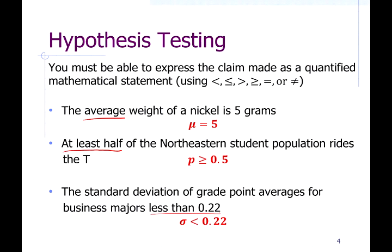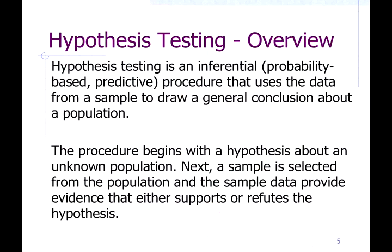Once we have the claim written symbolically, we can begin our hypothesis test. It's a probability-based predictive approach, which involves some possibility of error. We start with a hypothesis about an unknown population parameter, take a sample of data, and determine whether that sample data is strong enough to support or reject the claim being analyzed.